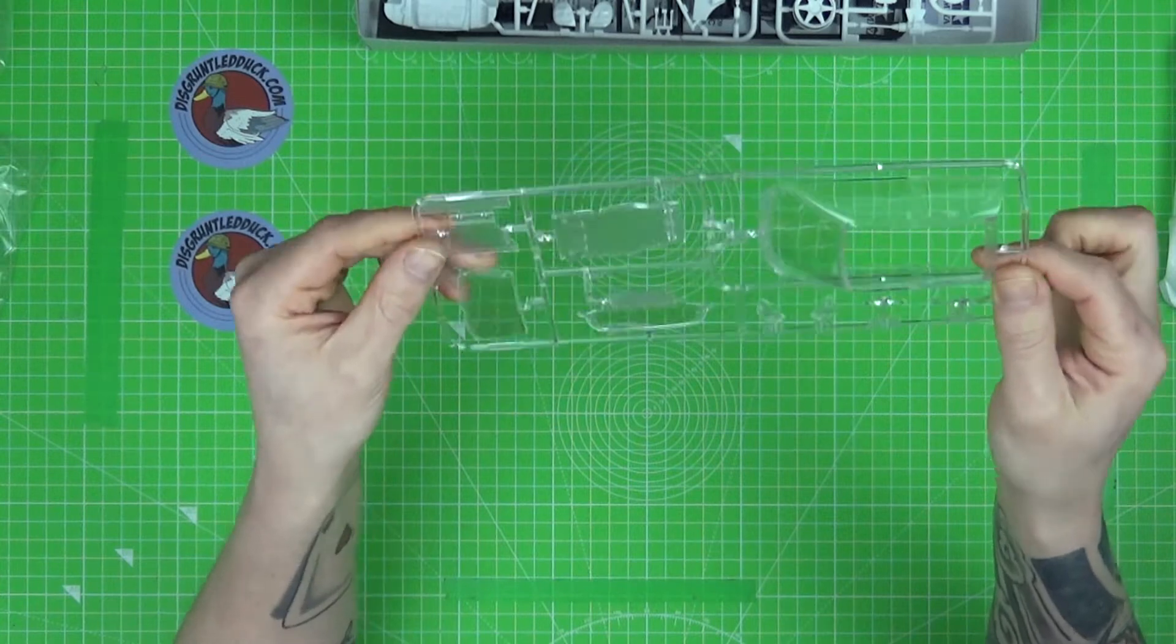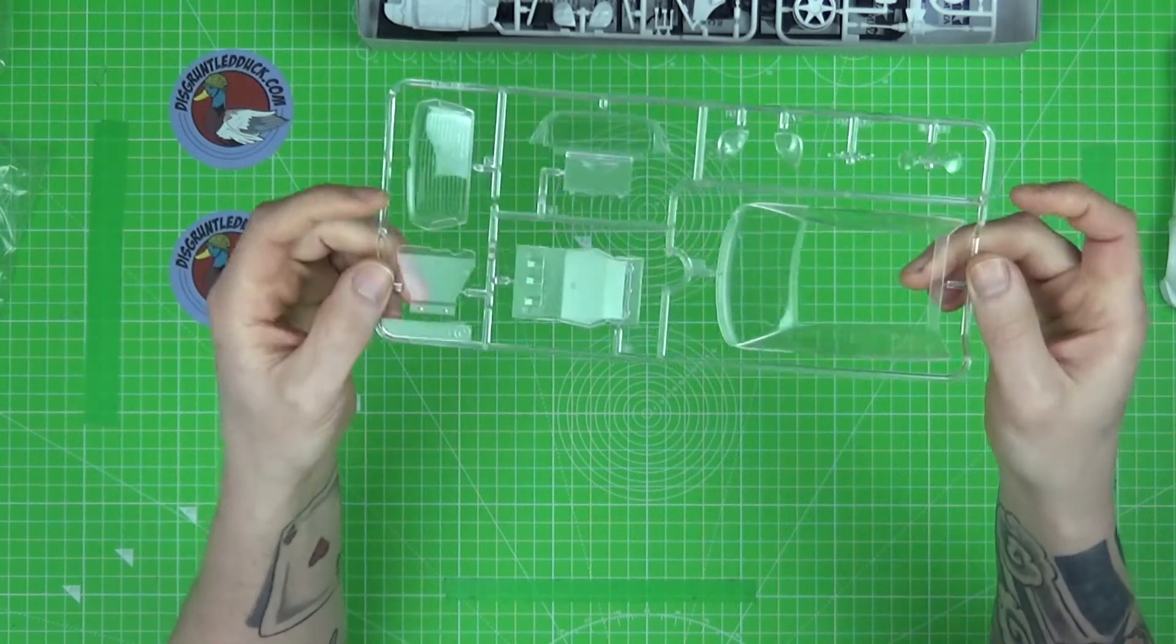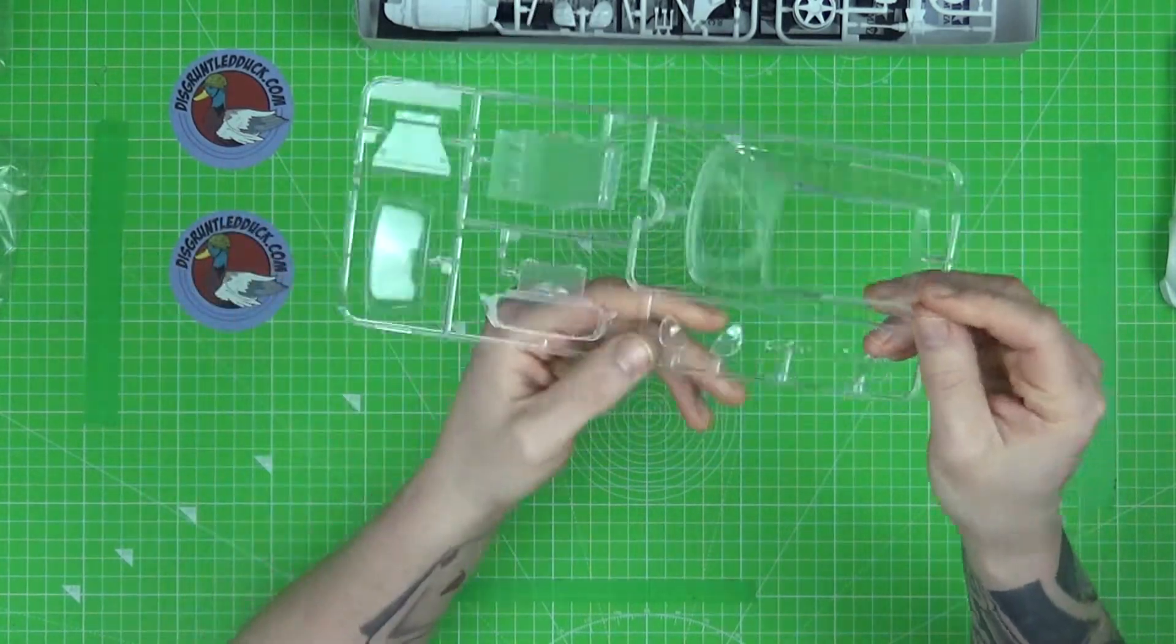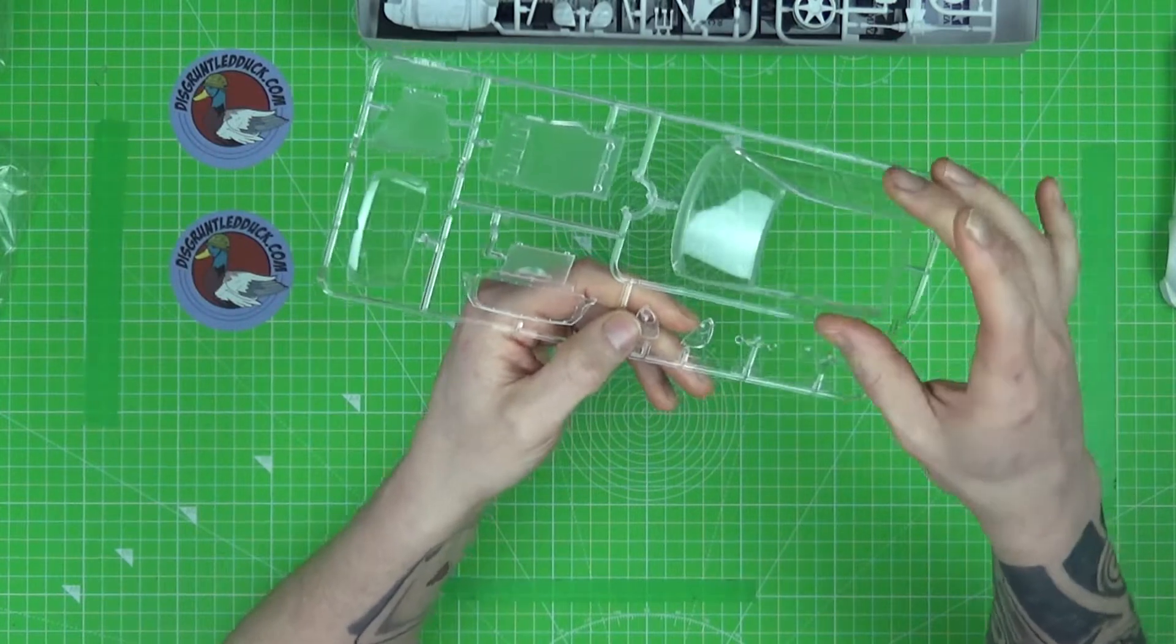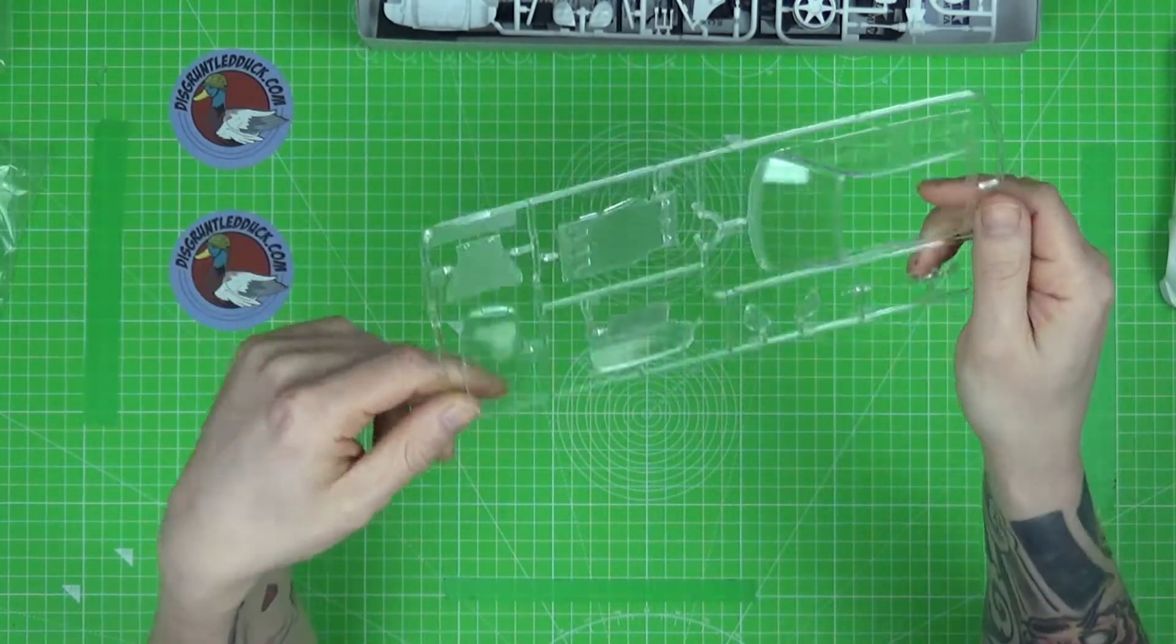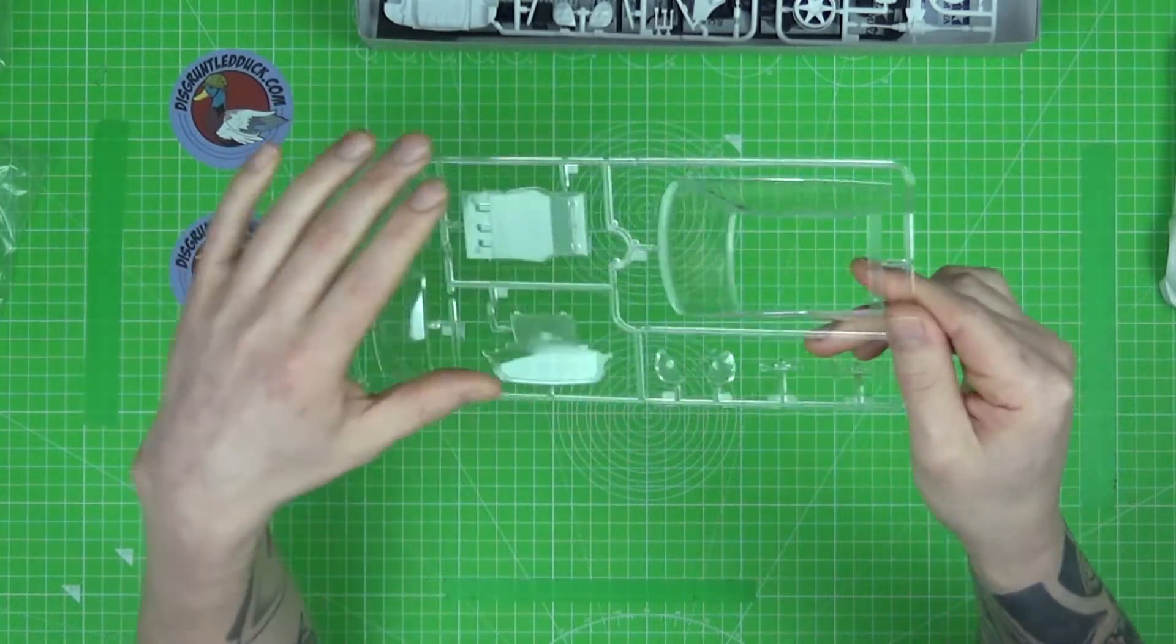Not too sure about this piece. I'm sure when we dig into the instructions we're going to find out what that's for. A solid piece to cover all the windows, side and front windscreen. That's going to save a little bit of fiddling around gluing windows in individually. That's nice.